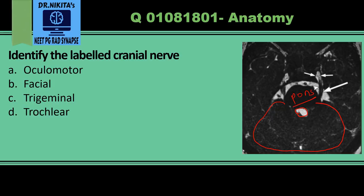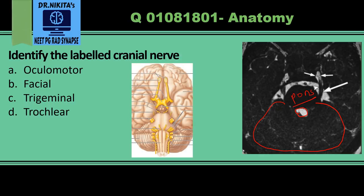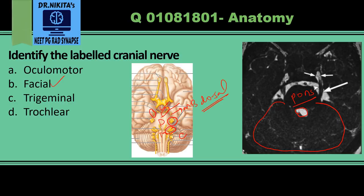Going back to first-year anatomy, the origin of the cranial nerves: the trigeminal nerve arises from the pons, the oculomotor nerve arises from the midbrain at the ventral aspect, the trochlear nerve arises from the midbrain but from the dorsal aspect — it is the only cranial nerve arising from the dorsal brainstem. The facial nerve arises in the cerebellopontine angle at the pontomedullary junction, forming the seventh-eighth nerve complex.